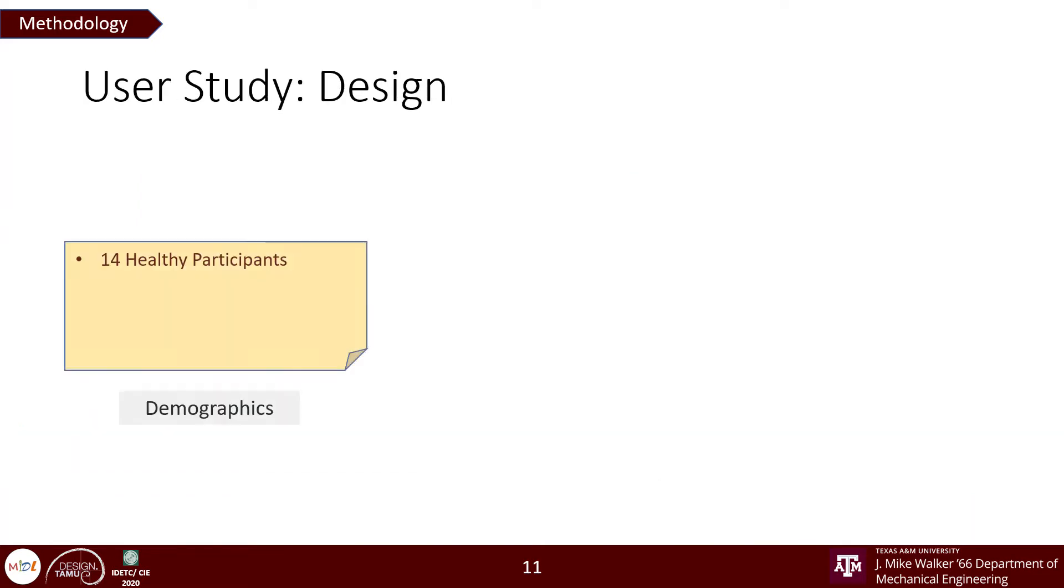For our user study, we recruited 14 healthy participants who were graduate and undergraduate students. Out of all, 13 had their right hand as a dominant hand and only one had their left hand as dominant. It has been found that people used their dominant hand for better spatial reasoning and control and we wanted to observe if it altered the experimental results.